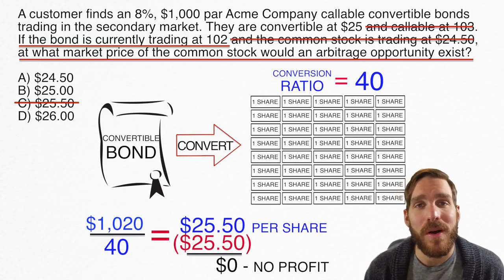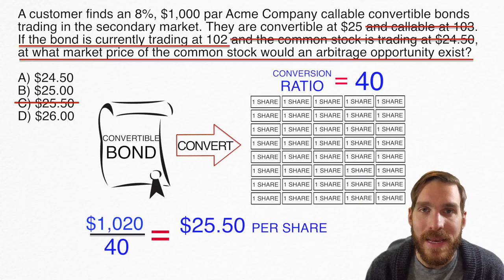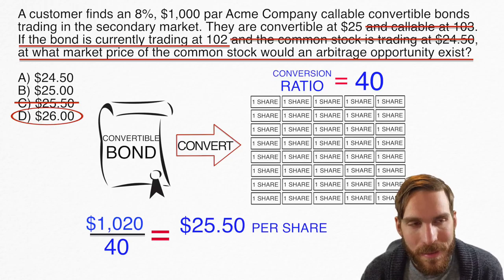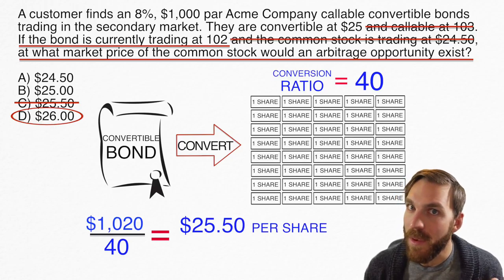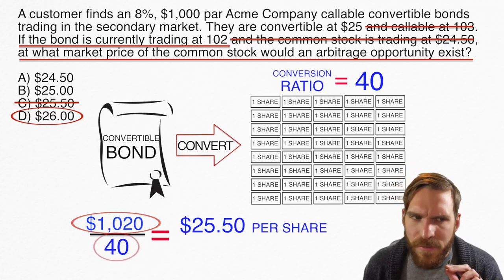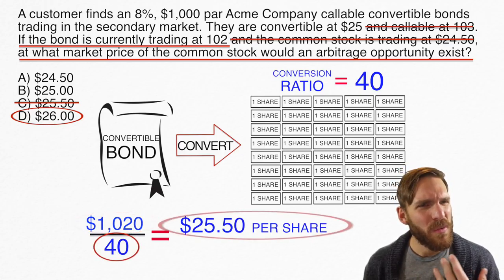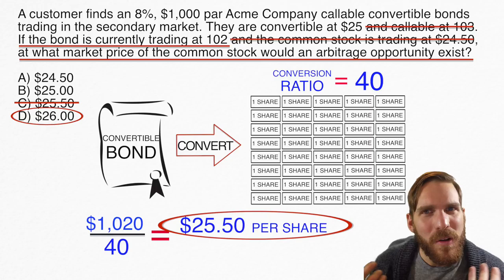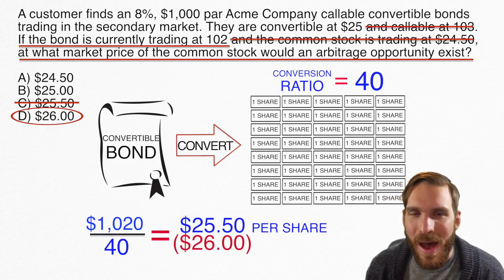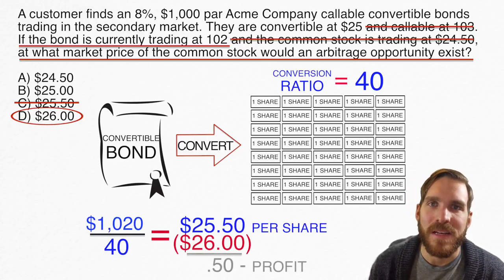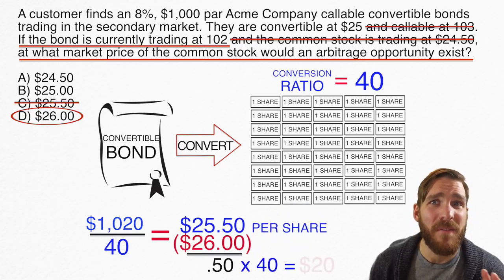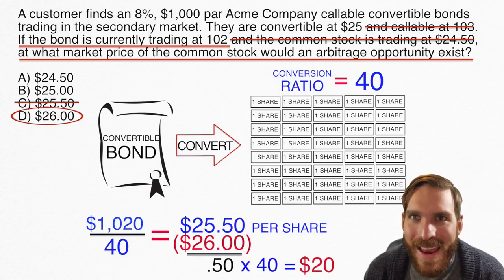Looking at the answer $26 a share — there could be a profit there. If I buy my bond for $1,020, convert into 40 shares, I'm paying $25.50 per share. If I immediately sell those shares for $26 a share, I just made a profit of $0.50 per share, or $20 total across 40 shares. That is arbitrage.